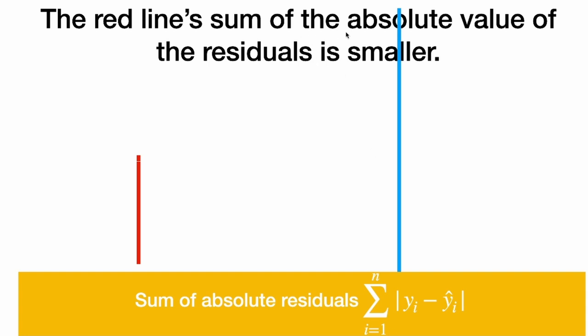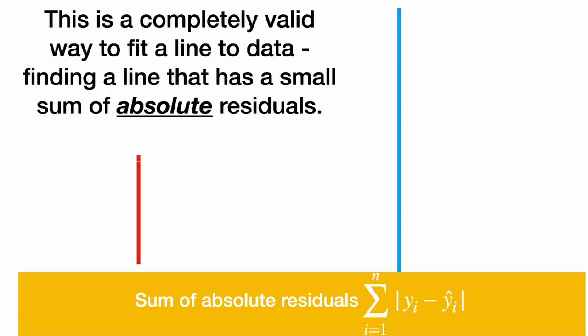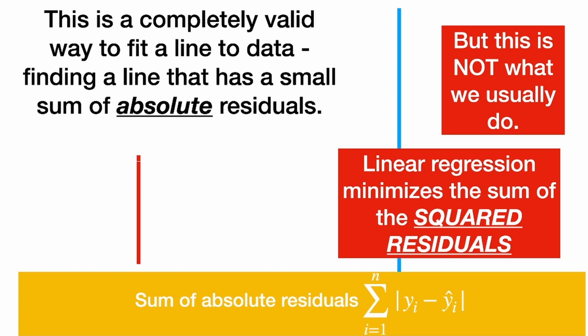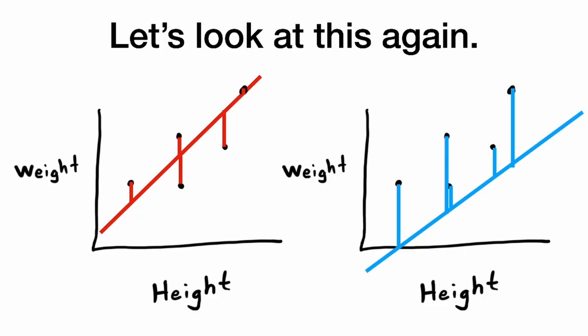And we add it up for all n data points. And we saw that the red line's sum of the absolute value of the residuals is smaller than the blue line. And this is a completely valid way to fit a line to data.